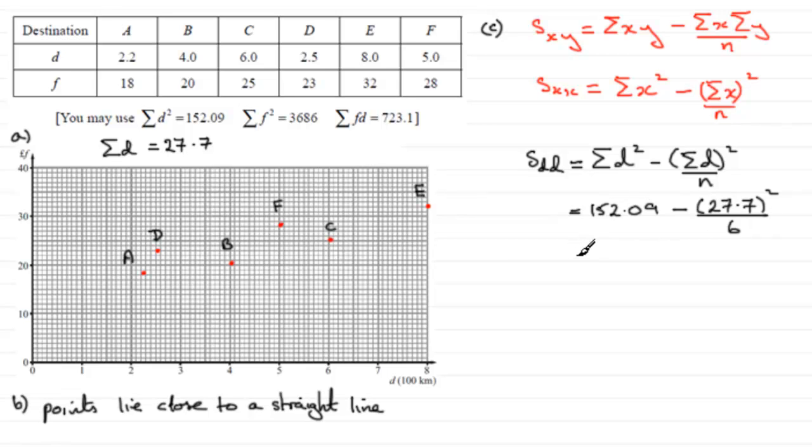Now if you work that out on your calculator, what you'll find you get is 24.208 and so on, which if you round that to three significant figures, is going to equal 24.2 to 3SF.